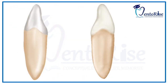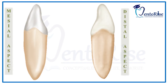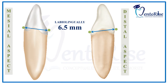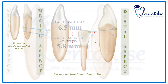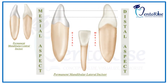Starting with the mesial and the distal aspects of this tooth, we find that the labiolingual dimension at the crest of curvature present in the cervical third of the crown is 6.5 mm, and the labiolingual dimension at the cervix is 5.8 mm. Let's discuss in detail the features of the mesial aspect and distal aspect of this tooth by comparing these two aspects.